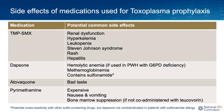Atovaquone doesn't have too many major side effects, except that it tastes bad. Pyrimethamine is very expensive; it can cause nausea and vomiting and can also cause bone marrow suppression if it is not co-administered with leucovorin.